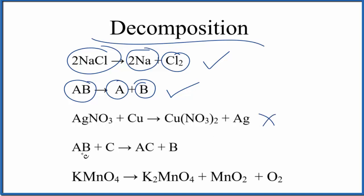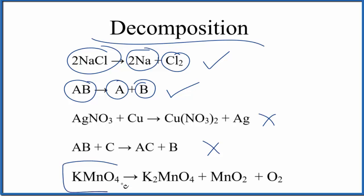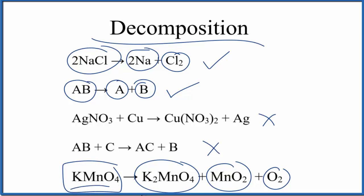Here again, AB plus C gives us AC plus B — two things here going to two things here. This is the general format for a single displacement reaction, not decomposition. Finally, we have one thing breaking apart into three things. We still consider that decomposition because the one thing is being broken down into more than just one thing.